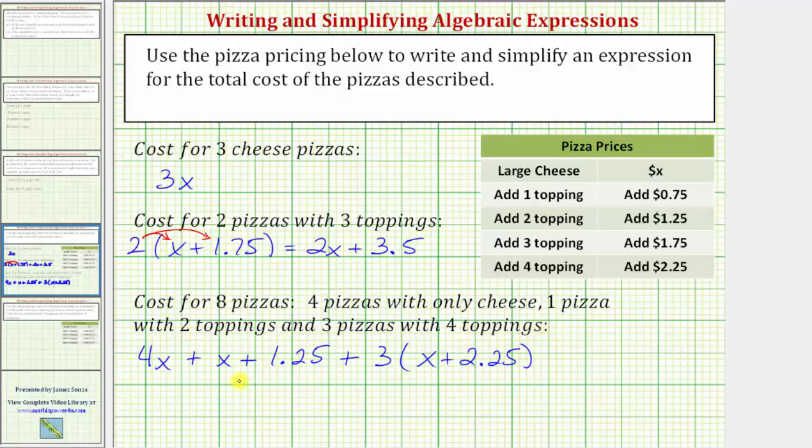And now, to simplify, we clear the parentheses, then combine like terms. Here, we distribute the three. We'd have three times x plus three times 2.25. The expression is 4x plus x plus 1.25 plus 3 times x is 3x, plus 3 times 2.25 is 6.75.